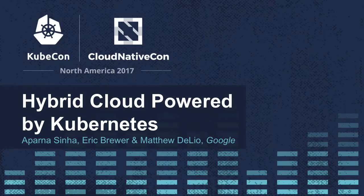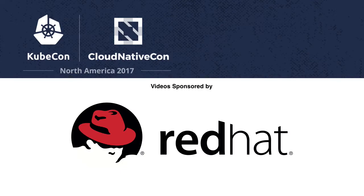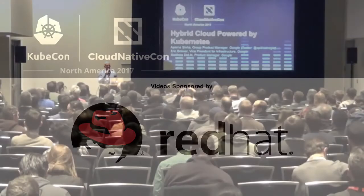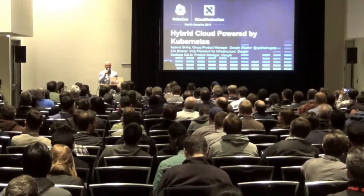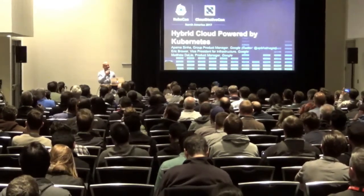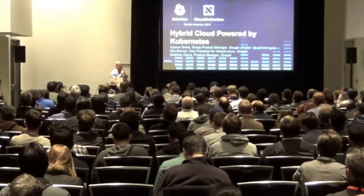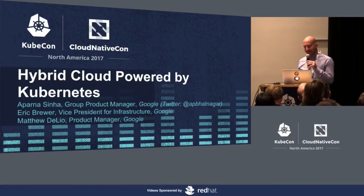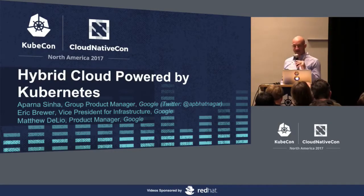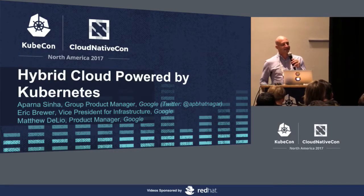All right, we're going to start now. I'm Eric Brewer, VP of Infrastructure at Google, and I can say I've been involved in Kubernetes longer than you — and I don't mean that in a mean way, I just feel really lucky. Some of the things I'll talk about today are things we discussed in Kubernetes in 2014 as aspirational goals.